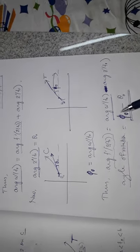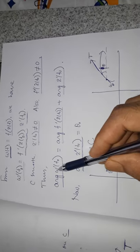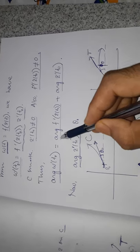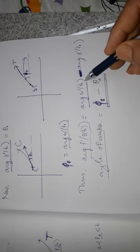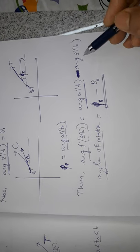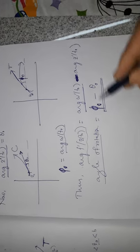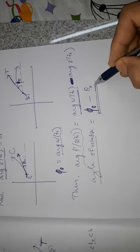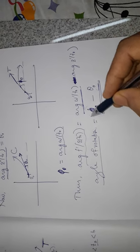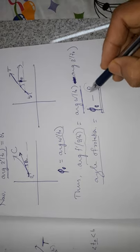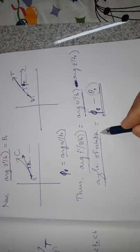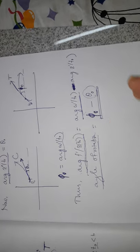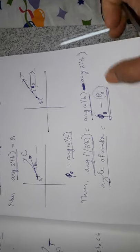From this relation, the argument of f'(z(t₀)) equals the argument of w'(t₀) minus the argument of z'(t₀), which is φ₀ minus θ₀. Here φ₀ is the image angle of inclination and θ₀ is the original angle of inclination, so this difference represents the angle of rotation of the tangents.